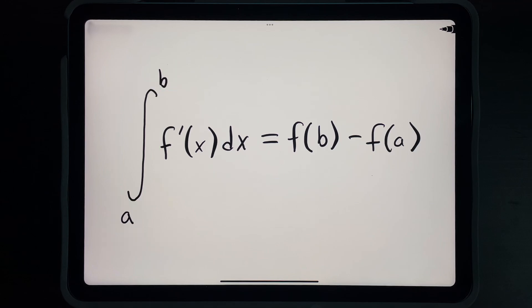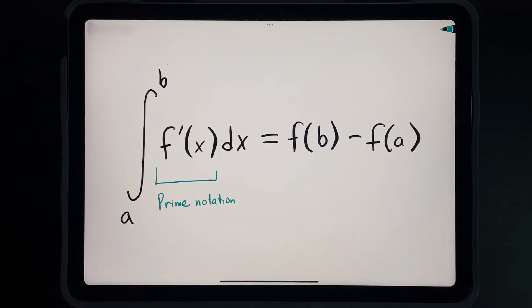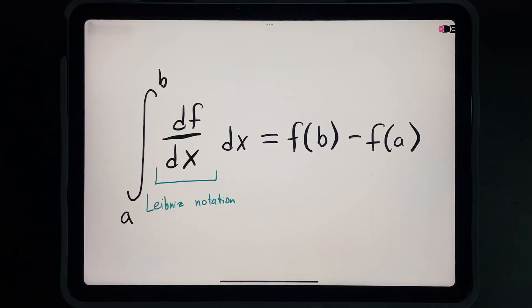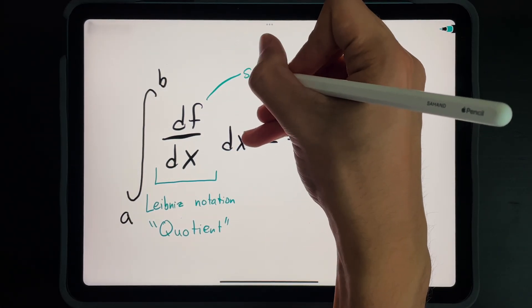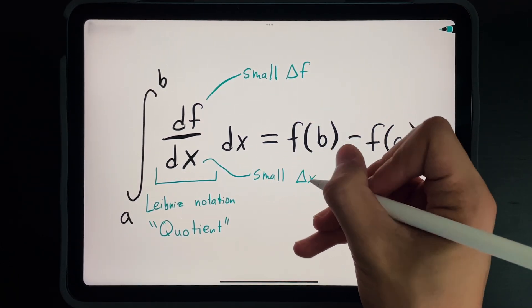I'm going to break this formula down step by step. We can write the derivative of f in prime notation as shown, or in Leibniz notation, like this. Leibniz notation essentially writes the derivative as a quotient, df divided by dx, where df is a very small change in f, and dx is a very small change in x.